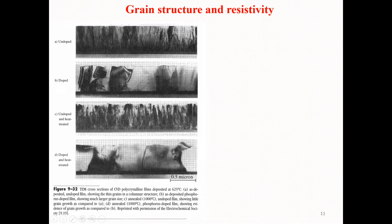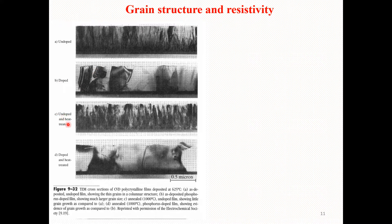Here you can observe the grain structures and resistivity of the thin film of polycrystalline silicon grown under different conditions. These are TEM micrographs. Image (a) shows a cross-section of a CVD polycrystalline film deposited at 650 degrees centigrade. It shows the as-deposited undoped film with thin film grains and a columnar structure.